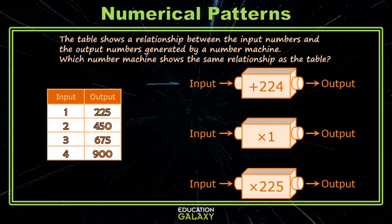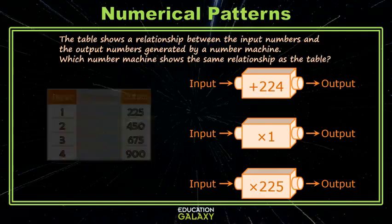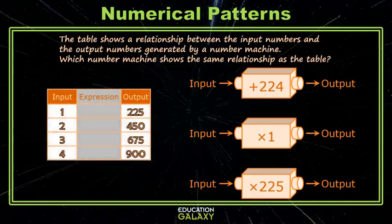If we look at the first one, the rule is to add 224. So to test this, let's give ourselves a little bit of room to work. I can test adding 224, which works for the first value. But if I add 224 to the next one, I get 226, which is not 450. So that doesn't work.